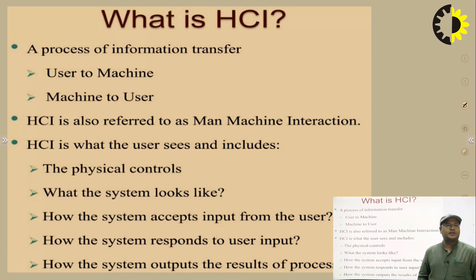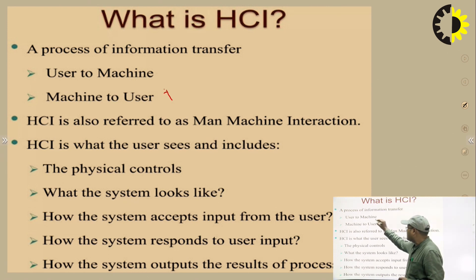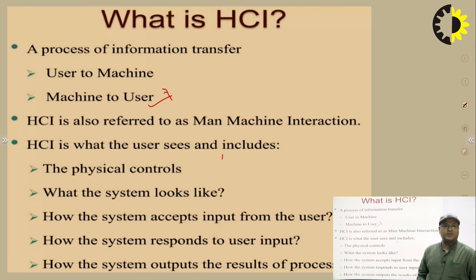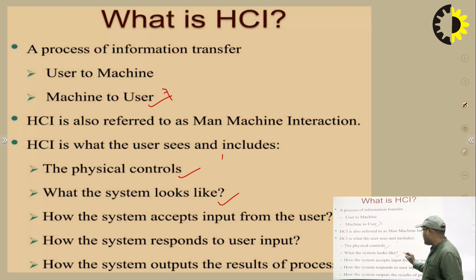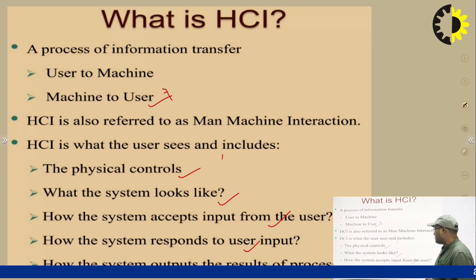Human Computer Interaction in short is called as HCI. It is a process of information transfer — from user to machine and then machine to user. HCI is also referred to as man-machine interaction because the man as a user is interacting with the computer. HCI includes: the physical controls, what the system looks like, how the system accepts input from users, how the system responds to user input, and how the system outputs the results of processing.